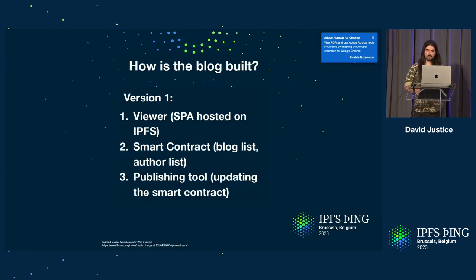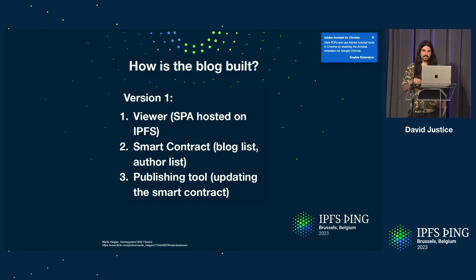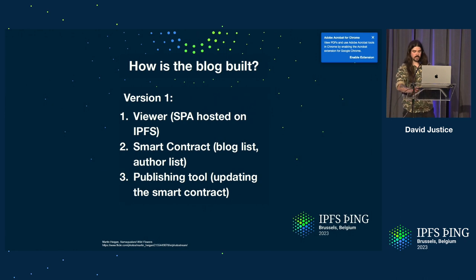So how's the blog built? Version one: we have basically a viewer, which is a single-page app. Then we have a smart contract, which is currently holding two arrays — a list of the blog CIDs, which are just markdown files, and a list of the authors who can push to that smart contract. And then we have a publishing tool, which is currently just a CLI that interacts with that smart contract. You upload your markdown file to IPFS, get the CID back, pass that into the CLI tool, and it updates the smart contract.